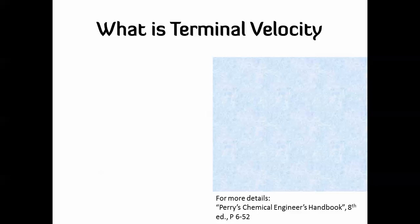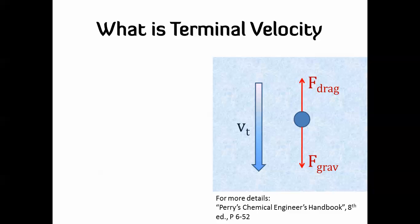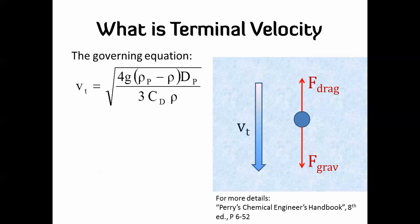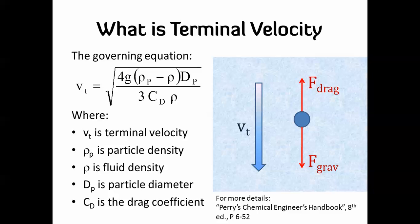It's pretty simple: you have a particle in a fluid, and there are two forces acting on it — gravity, which is mg, and the drag force, which resists the motion of the particle toward the bottom of the tank. The net force is directed downward, and the velocity is VT, the terminal velocity. This is calculated by doing a force balance on the two forces. The parameters are: VT (terminal velocity), ρP (particle density), ρ (fluid density), DP (particle diameter), and CD (drag coefficient).